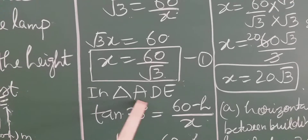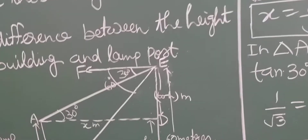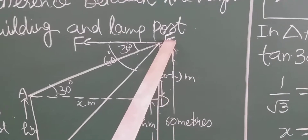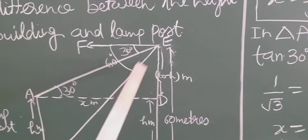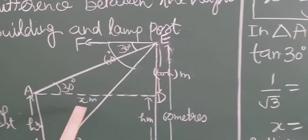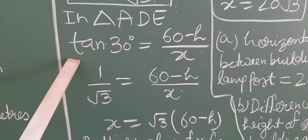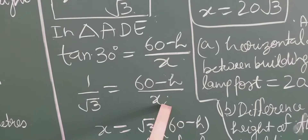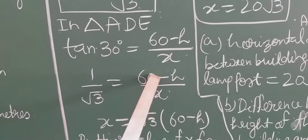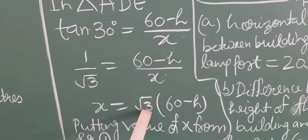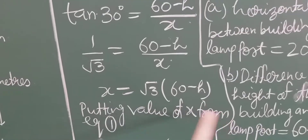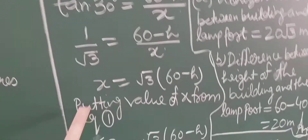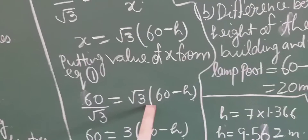Now in triangle ADE — again we take the right triangle ADE with angle D equal to 90 degree. tan30° equals perpendicular upon base, so tan30° equals 60 minus h upon x. The value of tan30° is 1 upon root 3, equal to 60 minus h upon x. By cross multiplication, x equals root 3 times (60 minus h).